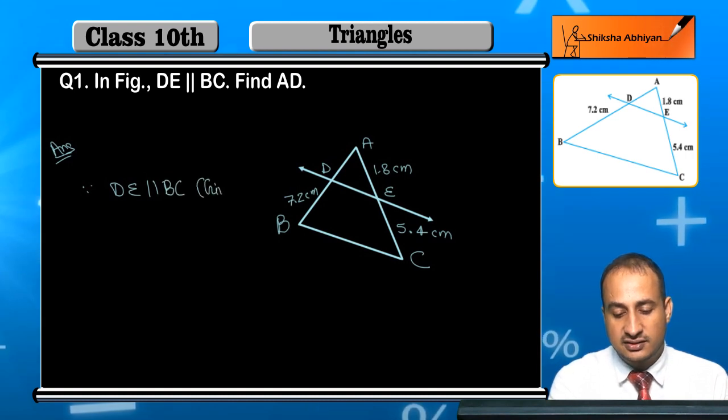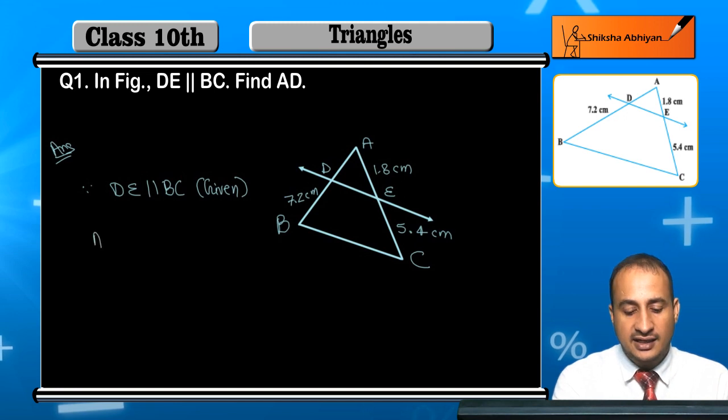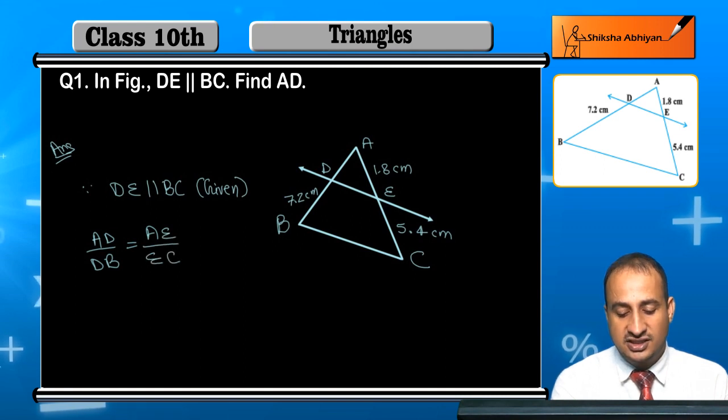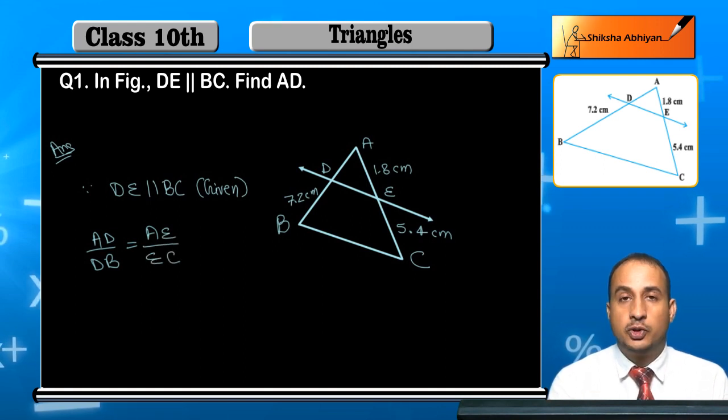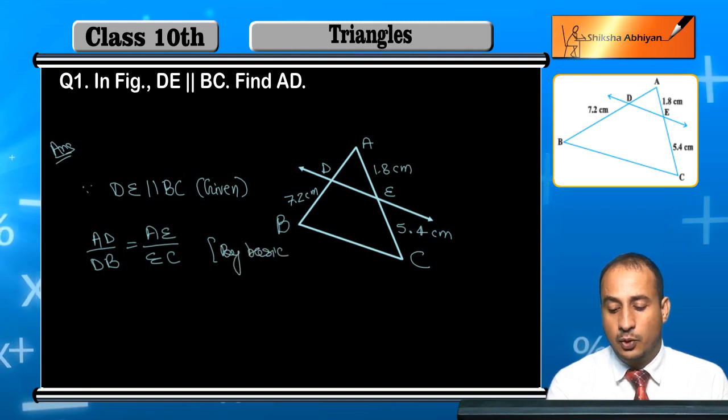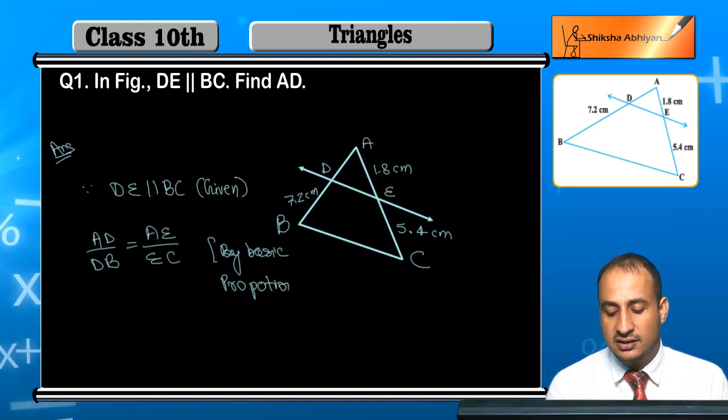I can write AD upon DB is equal to AE upon EC by Basic Proportionality Theorem.